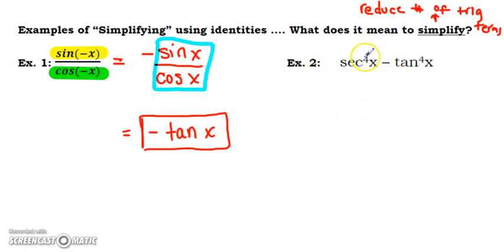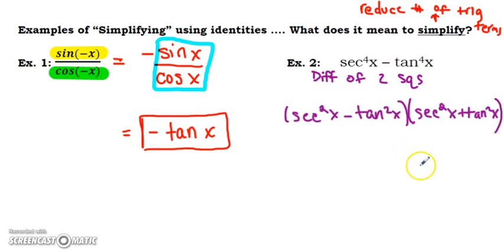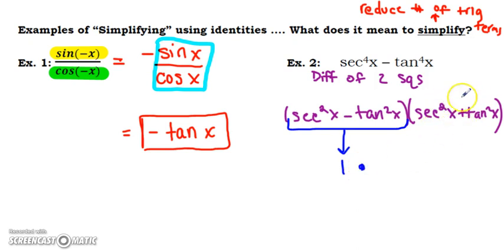Sometimes simplifying requires factoring. In example two, we have secant to the fourth power minus tangent to the fourth power. Those are perfect squares, so this is a difference of two squares. We can factor it as secant squared x minus tangent squared x, times secant squared x plus tangent squared x. One of these quantities in parentheses is a Pythagorean identity — secant squared x minus tangent squared x equals one.